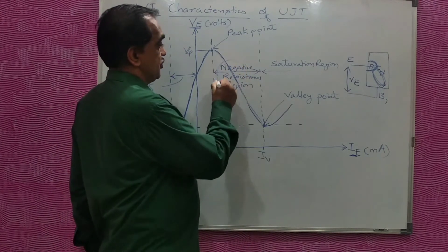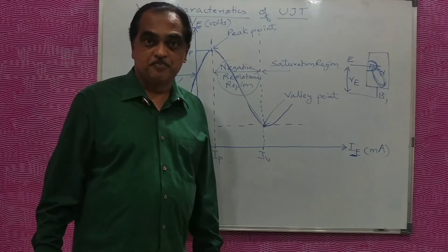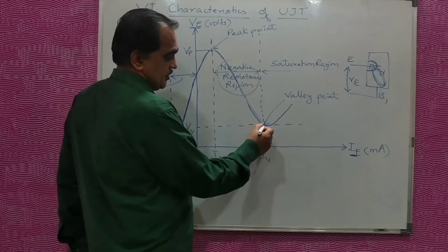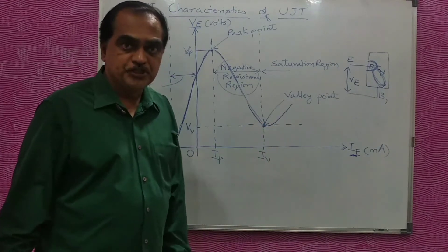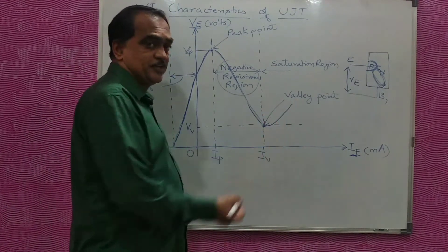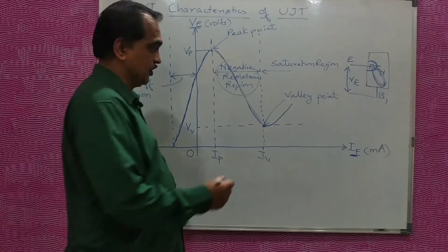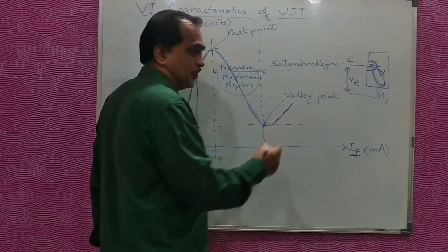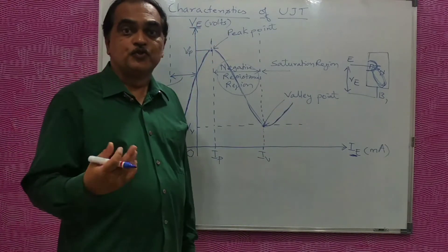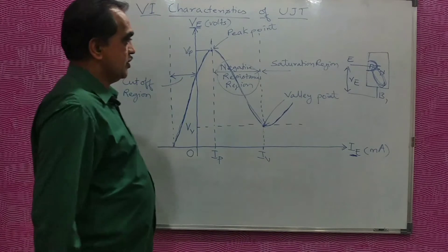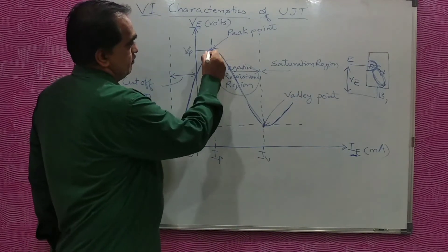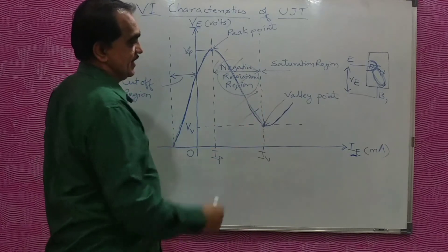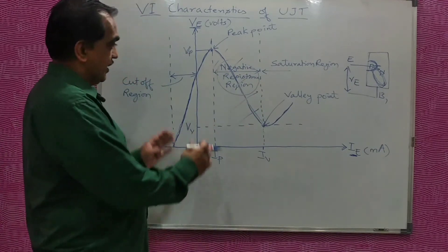This negative resistance region is very important for oscillation production. After you reach the valley point, if you increase the applied voltage further, the UJT shows normal behavior like a linear component — as voltage increases, current also increases. The area between the peak point and valley point is called the negative resistance region.